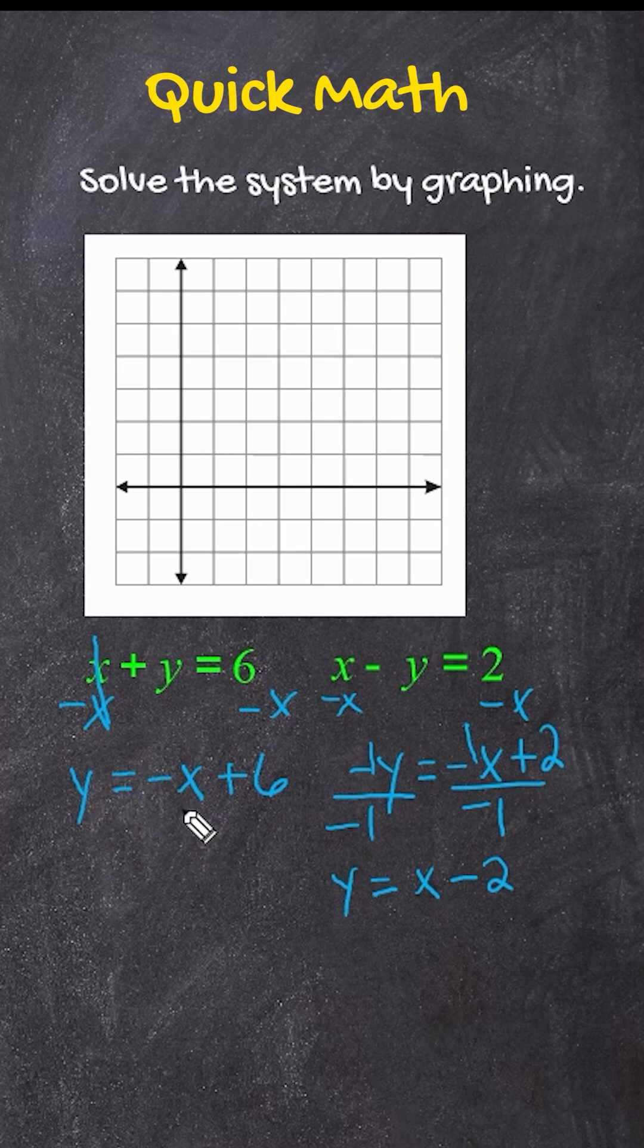Now to graph the equations, we're going to find our y-intercept. So we go to positive 6 and make a point. And from there, go down 1 over 1, down 1 over 1. And then we make a line going through the points.